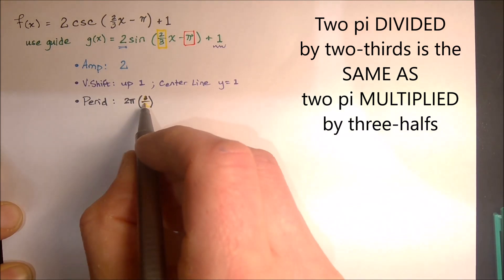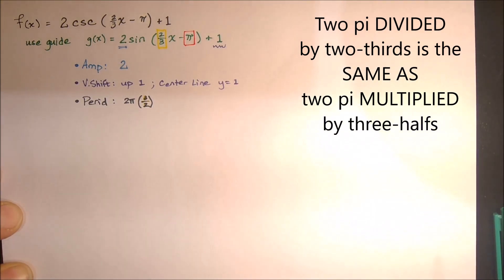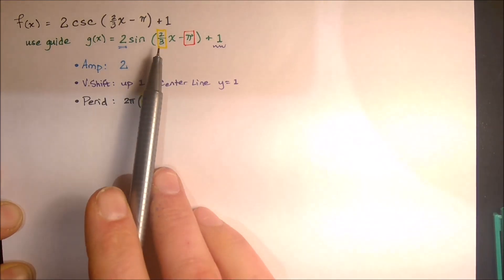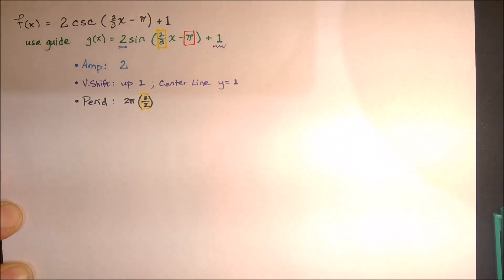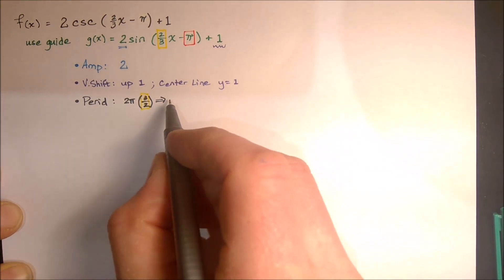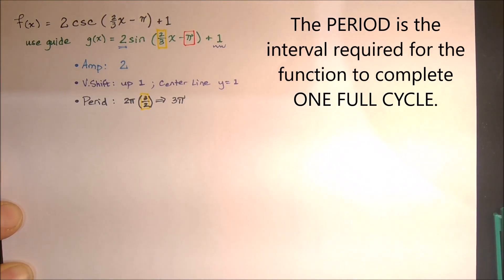That's 3 halves, so I'll actually rewrite it in black, and then just I'll put a box around it in yellow so you can see it. So that's just the reciprocal of 2 thirds. If I simplify that, the period 2 pi times 3 over 2 is actually 3 pi.